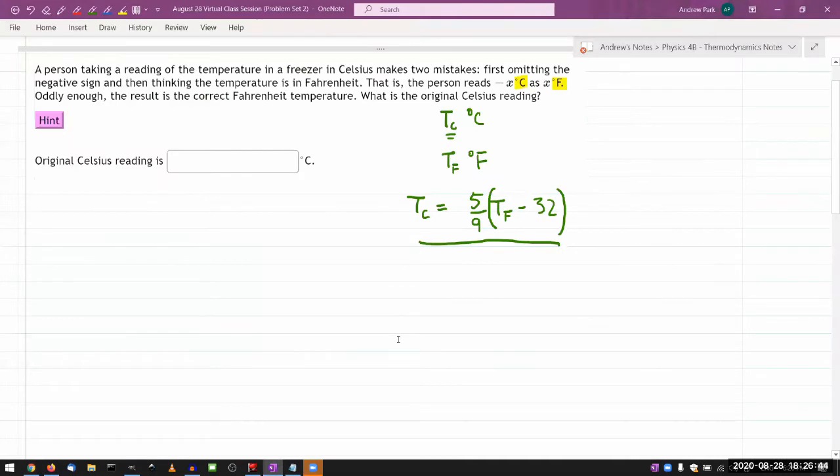So now, so this is a question that they could have given you even in a math class, provided they provided you with this formula to start. Once you have that, then it's kind of a word problem in math. So let me read the question, set up the equation, and then solve the equation. So it says, a person taking a reading of temperature in a freezer in Celsius makes two mistakes.